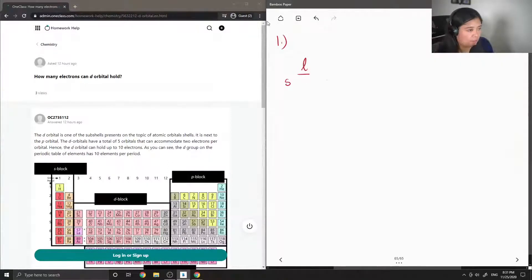So the L value for s, p, d, f just starts at 0, p is equal to 1, d is equal to 2, f is equal to 3.